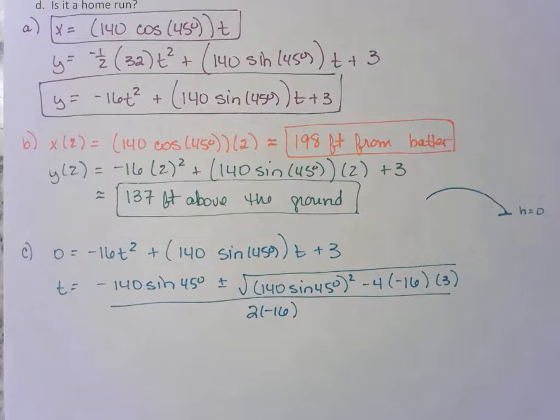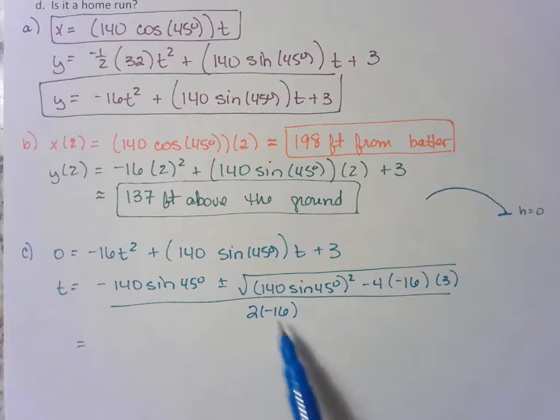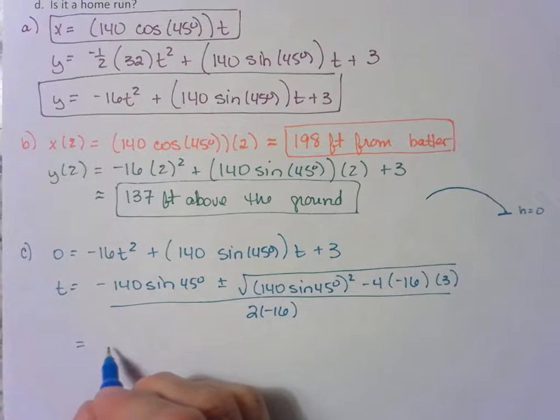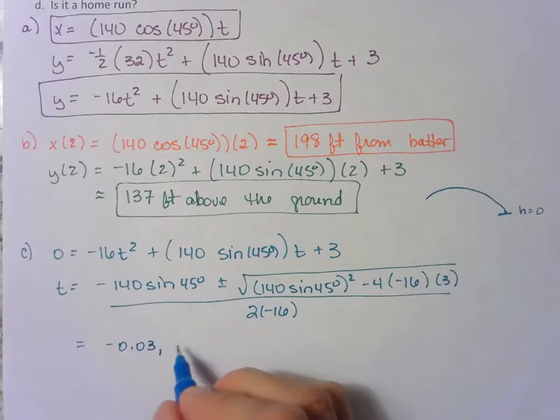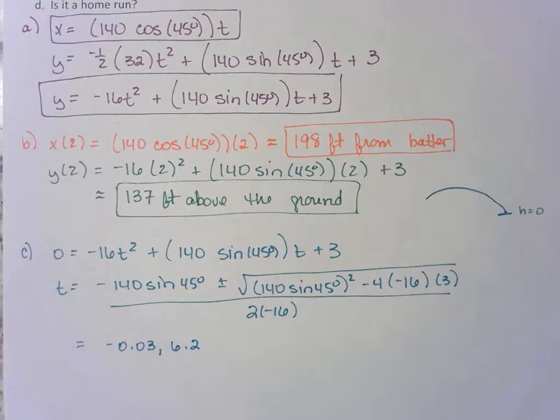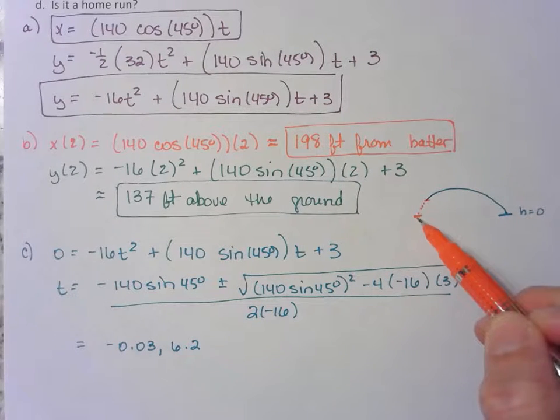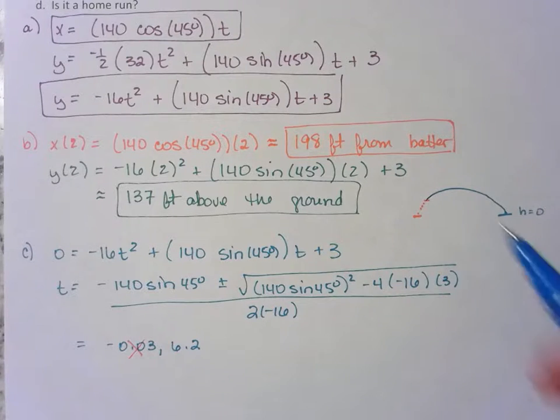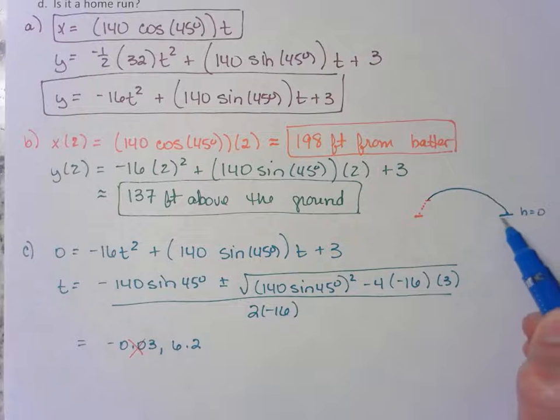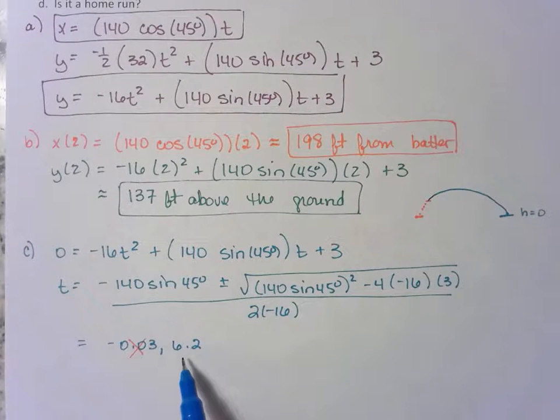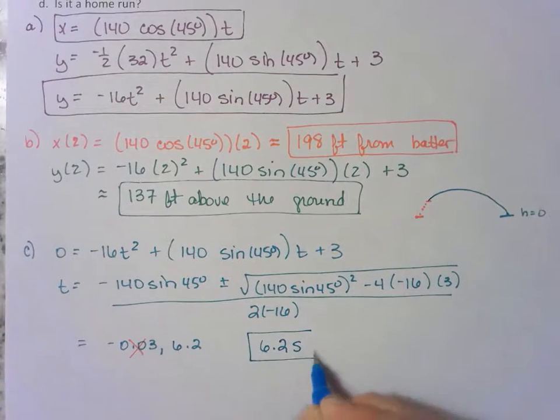So as long as you're super careful putting all of this into your calculator, you have this plus all this divided by the denominator, and you have this minus all this divided by the denominator. So whenever you do those two things, you end up with negative 0.03, and you also end up with 6.2. The reason you have a negative is because this ball actually left the bat three feet above the ground. So if it had started back in time, the other zero would be here. Make sense? So this is why we have a negative value because it's kind of back in time. So we don't really need this one. That means the ball is actually in the air until the height is zero, right? Well, the height is zero again after 6.2 seconds. That's how long it is in the air.